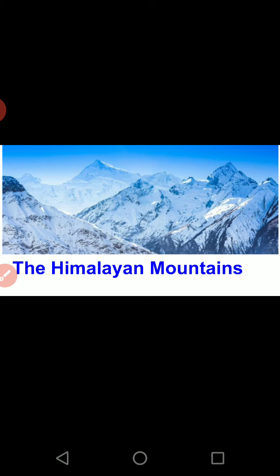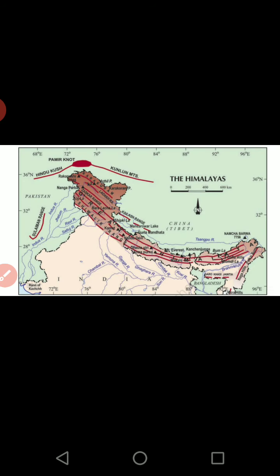As altitude increases, temperature decreases and the regions are very cold. As shown on the map, the dark shaded elevated region represents the Himalayas. The lines drawn on the map show the various ranges — a range means a group of hills or group of mountains.